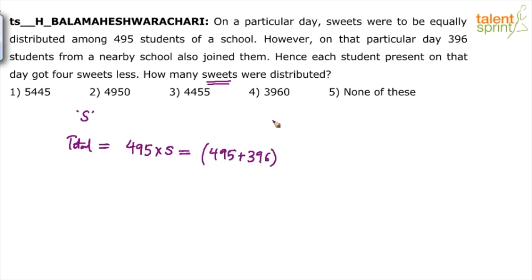And because of this, each student present on that day — how many students were present on that day? 495 plus 396. Each of these students got 4 suites less. They were supposed to get S but they have got 4 suites less: S minus 4.